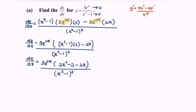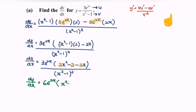Next, we can still factor out the value of 2. So finally, dy/dx is equal to 6e to the power 2x, bracket, x squared minus x minus 1, over x squared minus 1 to the power of 2.